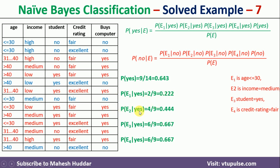P(E2|yes): E2 is income = medium. Among the yes examples, income is medium four times, so P(E2|yes) = 4/9 ≈ 0.444. P(E3|yes): E3 is student = yes. Counting yes examples: 1, 2, 3, 4, 5, 6 — so P(E3|yes) = 6/9. P(E4|yes): E4 is credit rating = fair. Counting in yes examples: 1, 2, 3, 4, 5, 6 — so P(E4|yes) = 6/9.